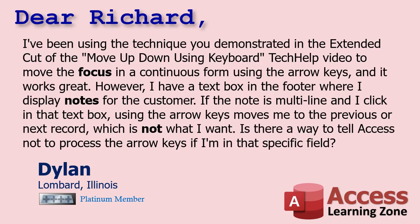Dylan says: I've been using the technique you demonstrated in the extended cut of the 'Move Up/Down Using Keyboard' tech help video to move focus in a continuous form using the arrow keys, and it works great. However, I have a text box in the footer where I display notes for the customer. If the note is multi-line and I click in that text box, using the arrow keys moves me to the previous or next record, which is not what I want. Is there a way to tell Access not to process the arrow keys if I'm in that specific field? Yes, Dylan, we certainly can.